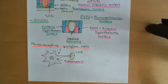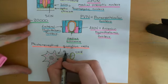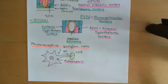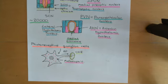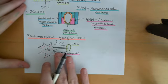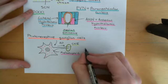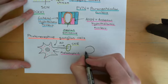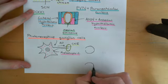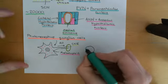The photoreceptive ganglion cell is capable of responding to light because it contains a very special photosensitive pigment called melanopsin. Melanopsin can absorb light, and when it does, it results in depolarisation of the electrical potential difference across the cell membrane. This can then result in the ganglion cell being more likely to fire action potentials — the more light you expose a photoreceptive ganglion cell to, the more frequently it will fire action potentials.